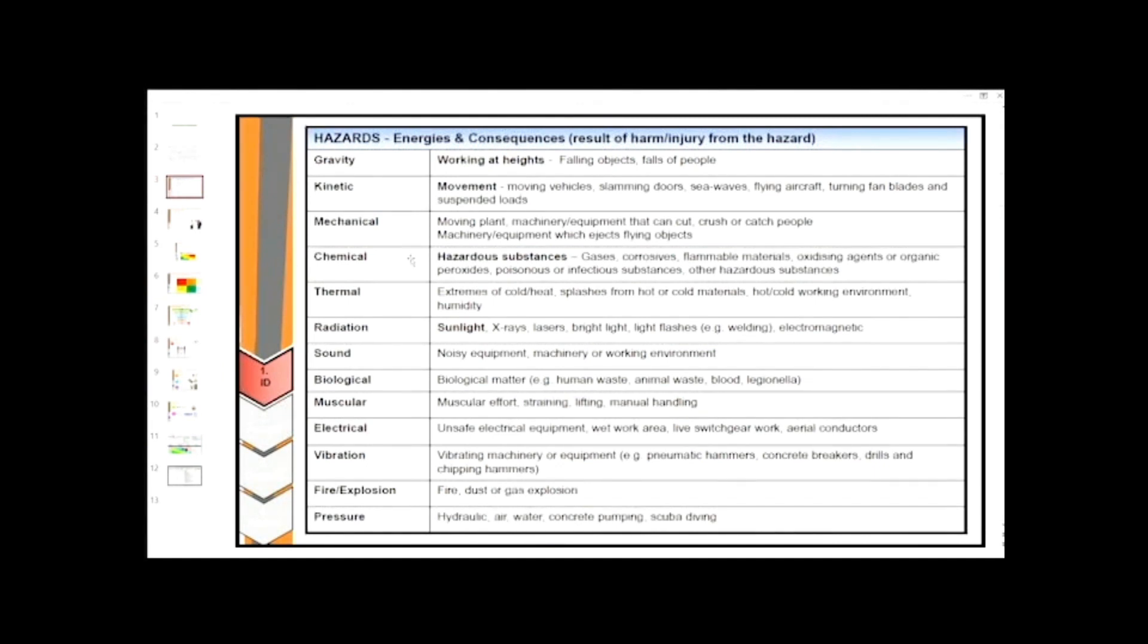Chemical hazards include hazardous substances, gases, corrosives, flammable materials, oxidizing agents, organic peroxides, poisonous or infectious substances, or other hazardous substances.